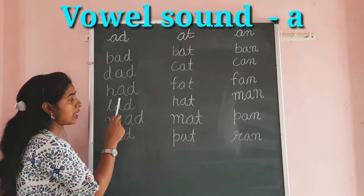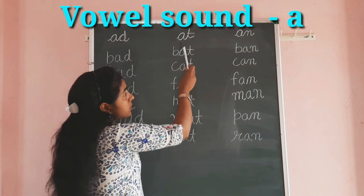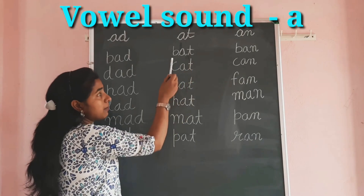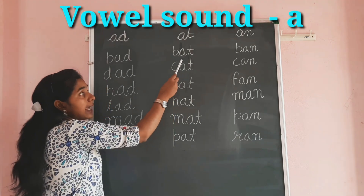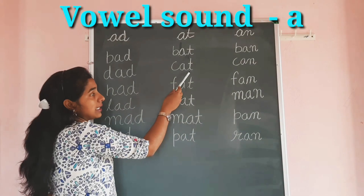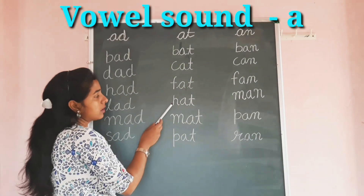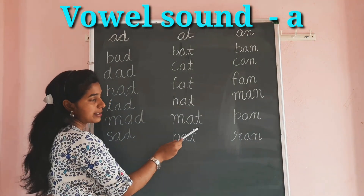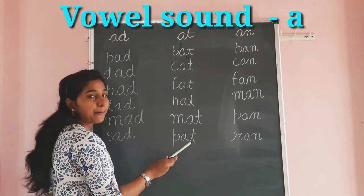We will listen to the sound of A in all these words. Next slide. All these words have A-D. So we will start to read them: B-A-D, Bad. C-A-D, Cad. S-A-D, Sad. H-A-D, Had. M-A-D, Mad. P-A-D, Pad.